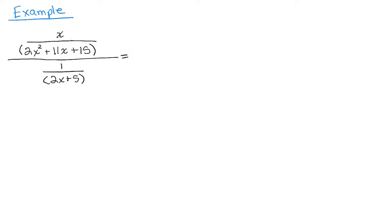And I'm going to do this in one step. I'm going to write that as what's in the numerator, which is X over 2X squared plus 11X plus 15. And instead of writing divided by this, I'm going to go ahead and multiply it by the reciprocal in the first step. Just slightly less writing.